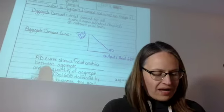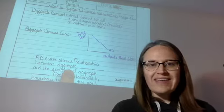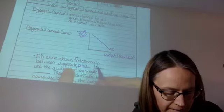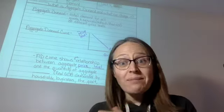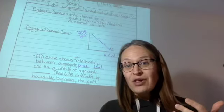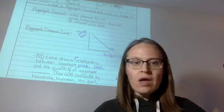Now, the aggregate demand curve shows the relationship between the aggregate price level—by the way, aggregate means total—so when we're talking about the aggregate price level, we're talking about the price level of all of the goods and services in the whole economy.